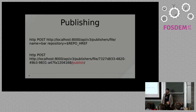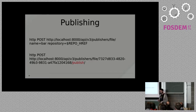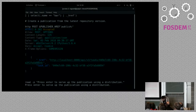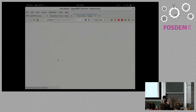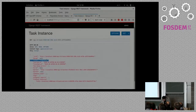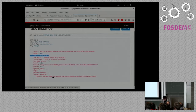Next we want to publish this repository version. We're going to make some REST API calls — we'll create a publisher specific to the file plugin and then call the publish method on that publisher. Publish is also an asynchronous task, which we can follow here. It has completed and it created a publication.